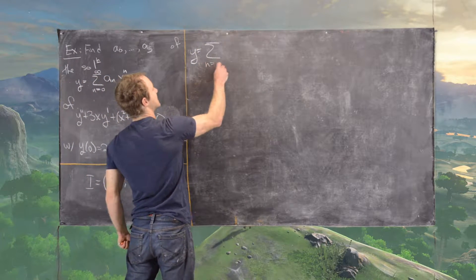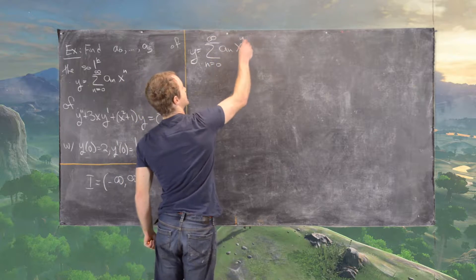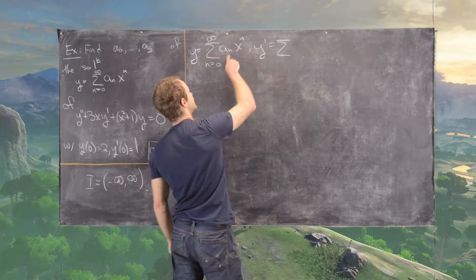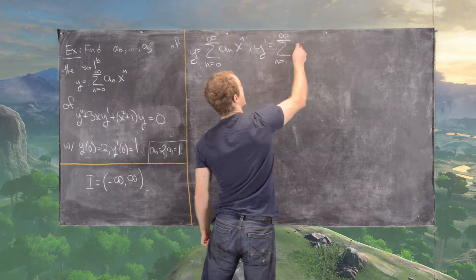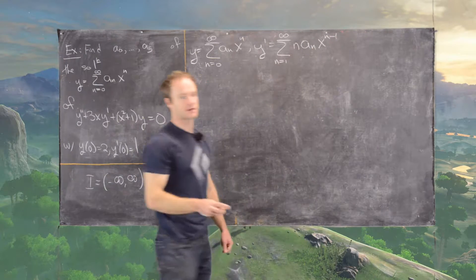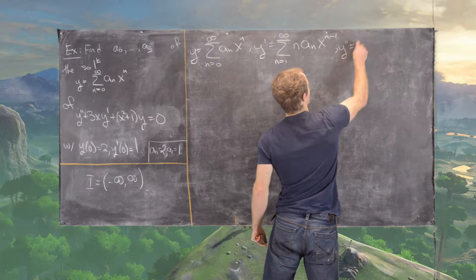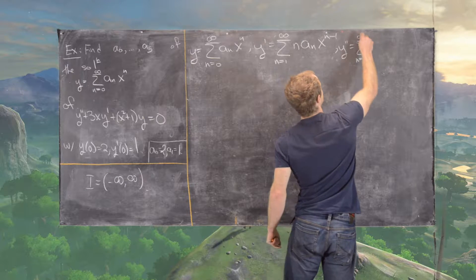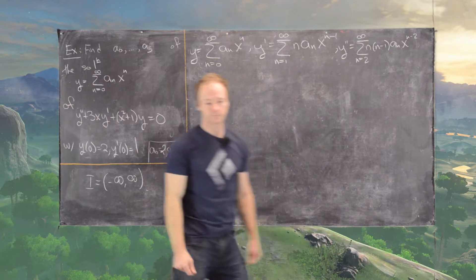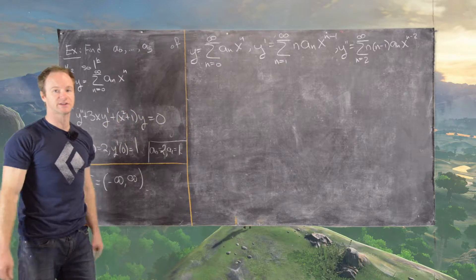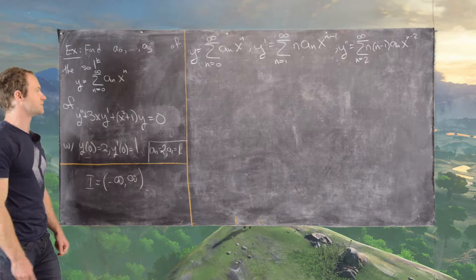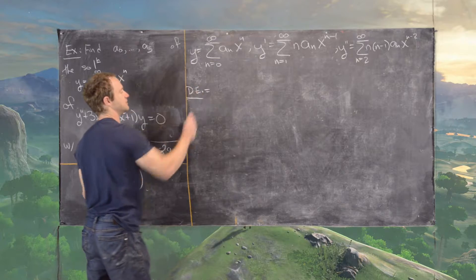As usual, we're going to start by setting y equal to our series and then calculating its derivatives. So if y equals the sum from n=0 to infinity of a_n x^n, then y prime is the sum of n·a_n·x^(n−1) by term-by-term differentiation. And y double prime is the sum from n=2 to infinity of n(n−1)·a_n·x^(n−2). Now we want to plug these three series into the differential equation and see what the coefficients must satisfy in order to have a solution.